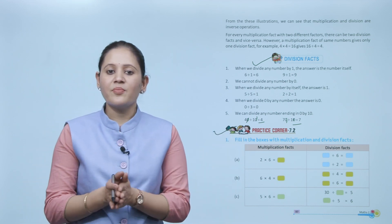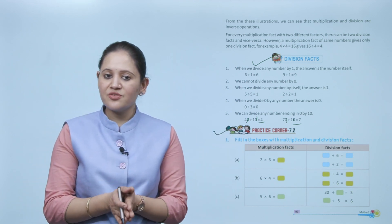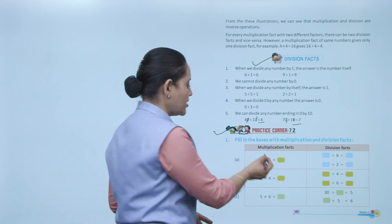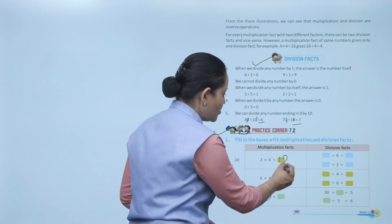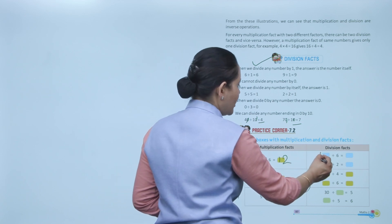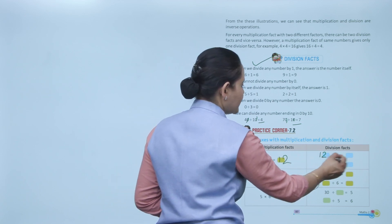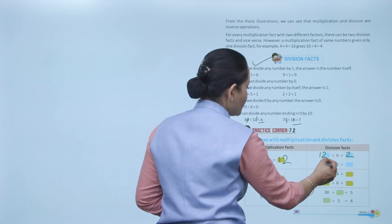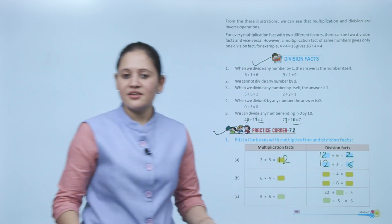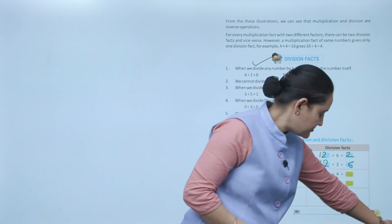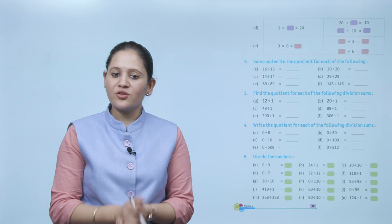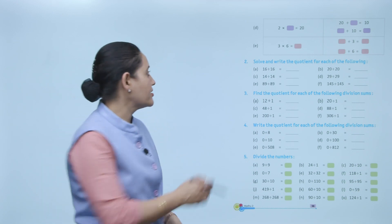Practice corner 7.2 — fill in the boxes with multiplication and division facts: 2 into 6 is 12. Division facts: 12 ÷ 6 = 2 and 12 ÷ 2 = 6.